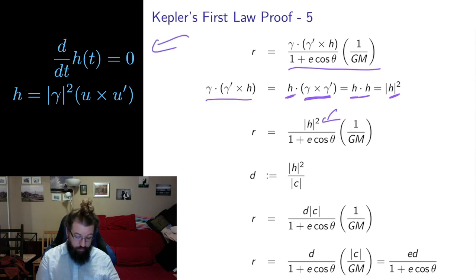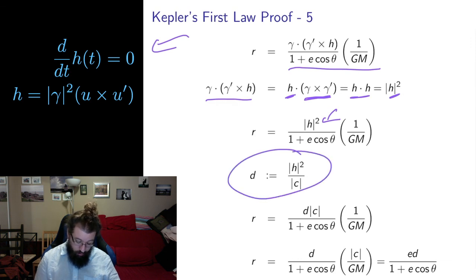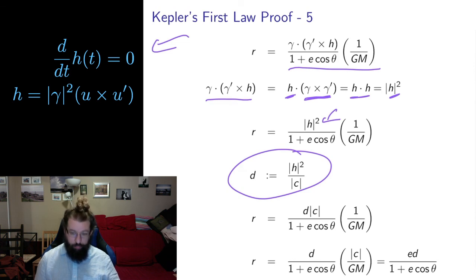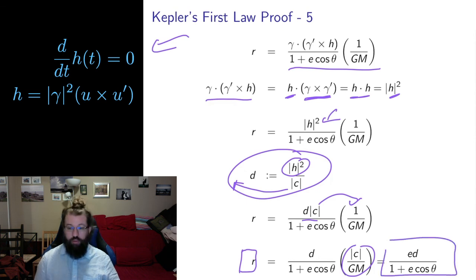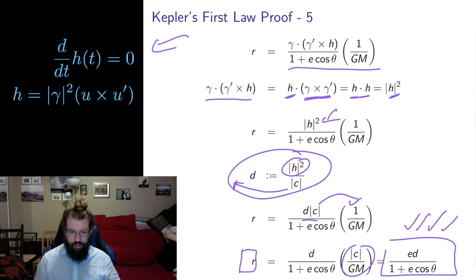H is a constant by lemma 1, so I define another constant d as the length of H squared divided by c, which also depends on initial conditions. Replacing the length of H squared with d times c, I can move c over, recognizing that c over GM is e. What I get is r equals ed divided by 1 plus e cos theta — precisely the polar conic form I wanted.